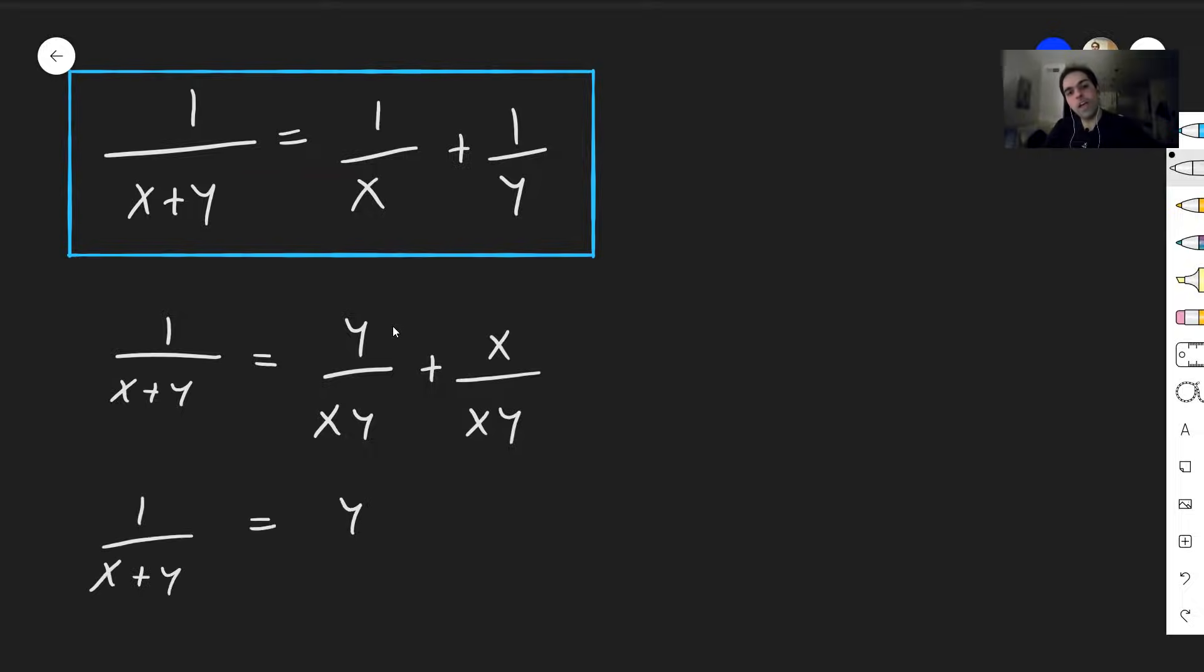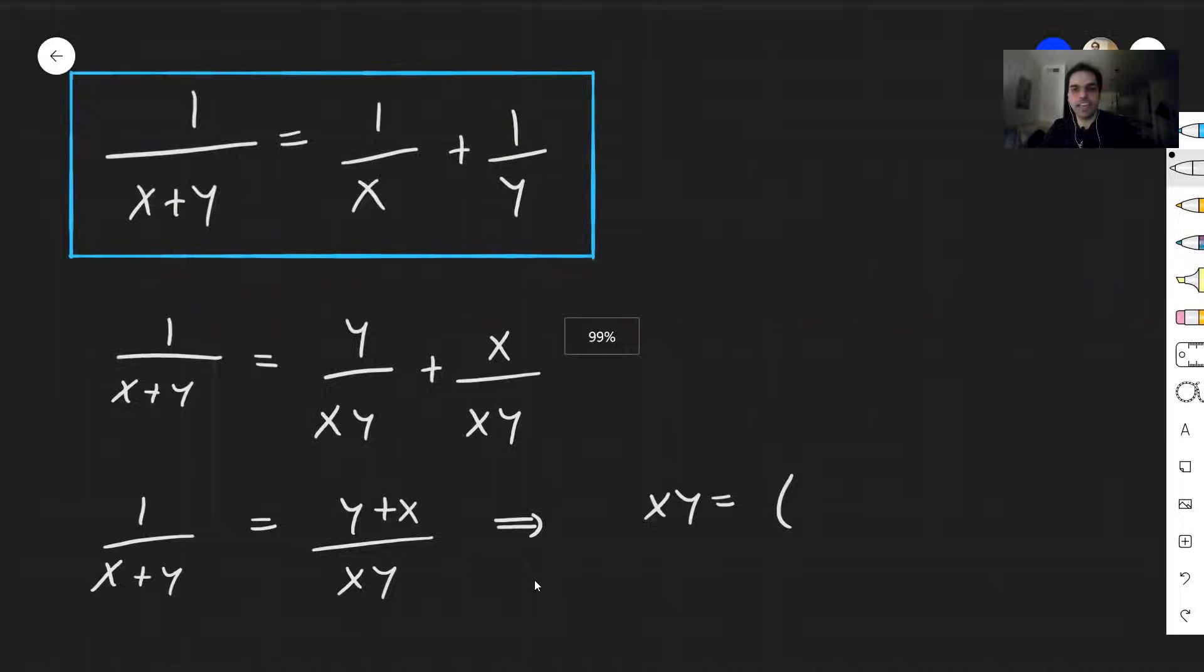That is y plus x over xy. And now just cross multiply this, so then this becomes 1 times xy, so xy equals y plus x times x plus y, so x plus y squared.